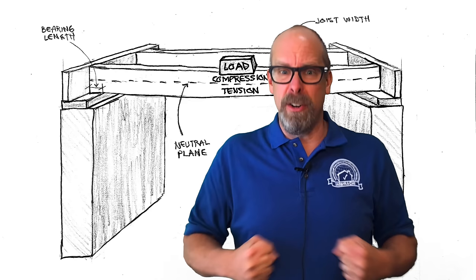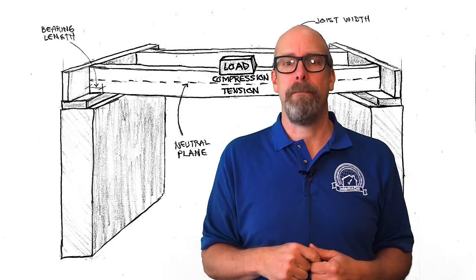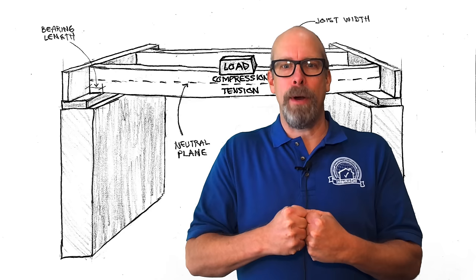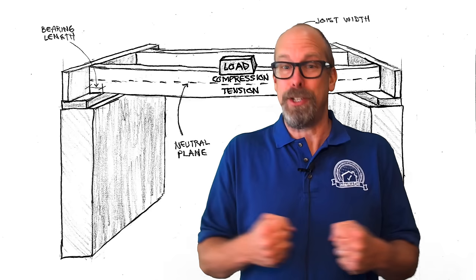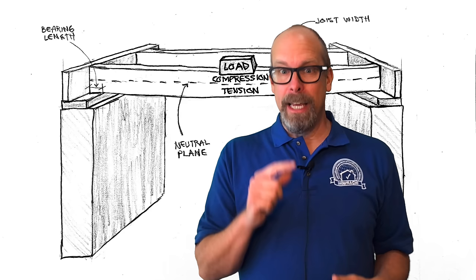When a load is put on a joist, the fibers in the top of the joist compress, and those in the bottom are under tension, and in the middle, what engineers call the neutral plane, these forces diminish to zero. The ability of the wood fibers to resist being scrunched by compression or stretched out by tension directly translates to how much a joist deflects, and is why denser wood species can span farther. They're better at resisting the stretching and the scrunching, and therefore they deflect less.